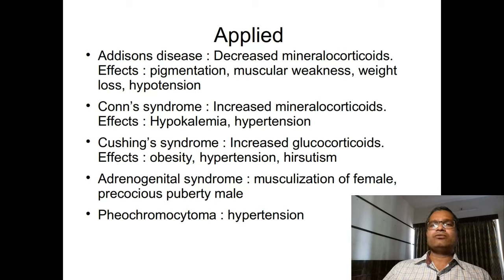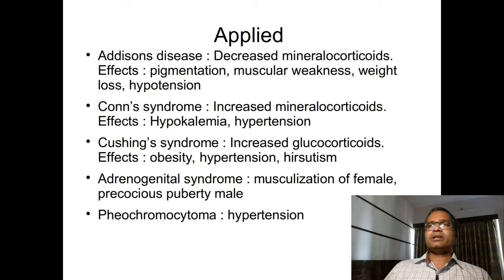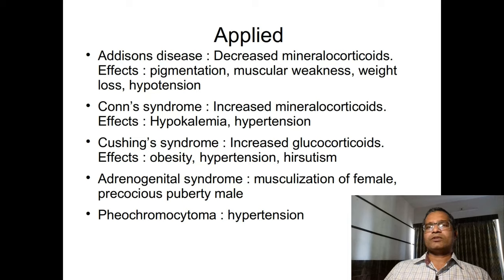In the applied anatomy, the first condition is Addison's disease, which results from decreased secretion of mineralocorticoids. This leads to decreased reabsorption of sodium from the nephrons of the kidney, causing hypotension, pigmentation of the skin, muscular weakness, and weight loss.